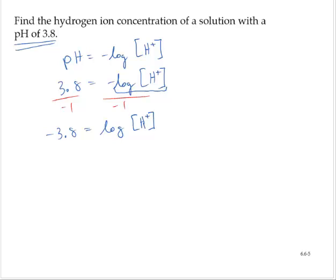Recall that this log is base 10. So now to solve for the hydrogen ion concentration, we will convert this to the exponential form: 10 raised to the negative 3.8 power is equal to H plus.